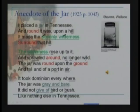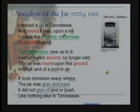The roundness and 'surroundness' of the whole poem is also suggested by the repetition of Tennessee — in the beginning and at the end. Basically, the poem shows how the jar has a kind of organizing influence on the surrounding, like art.